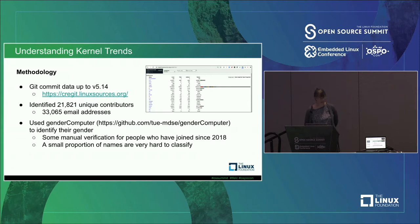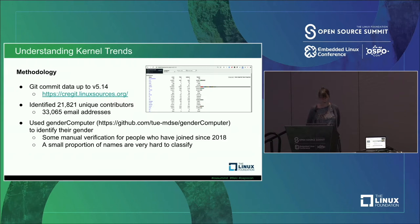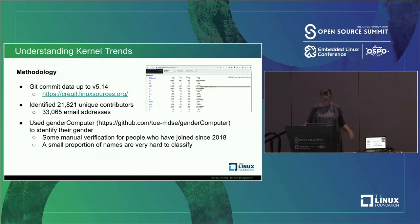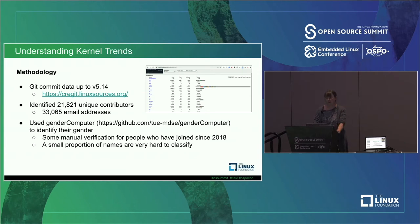We've also done work using a gender classifier to try to map people's names to their gender, so we can start to look at trends from a diversity perspective. Since 2018 we've been doing manual verification as we knew people joined the community, though some names are very hard to classify. That's the background behind the numbers and data you'll be seeing.